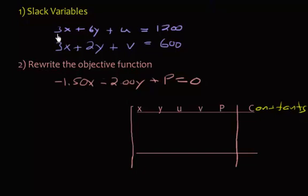Let me write constants. So, we have, let's take our first equation here, 3x, 6y, u. So, then we're going to use 3, 6, 1u. Notice that we do not have any v's up here. So, if you don't have any v's, you just put a 0. And I don't have any p's, so that will be 0. And then, my constant is 1,200.